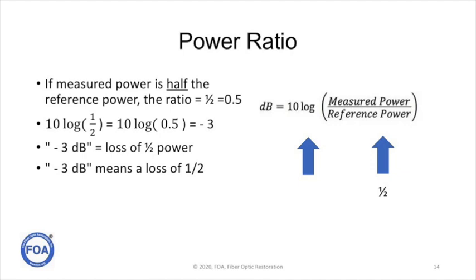What if the measured power is half of the reference power? The ratio becomes 1 half, or 0.5. 10 times the log of 1 half, or 10 times the log of 0.5, is minus 3. Minus 3 dB means a loss of half of the power, or a loss of half. So 3 dB is a loss.